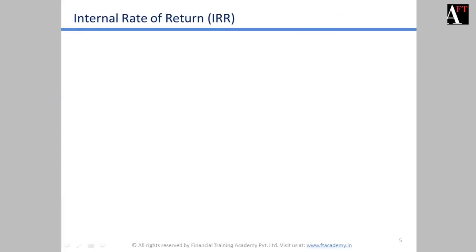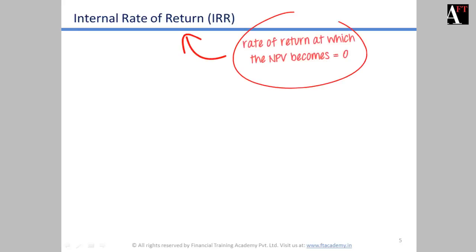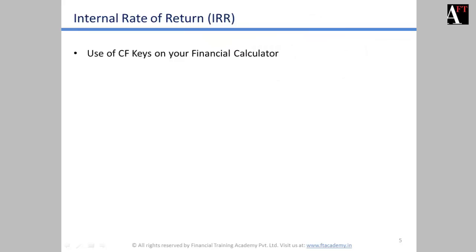The next topic is IRR — internal rate of return — which is very important and is frequently used for decision-making. Internal rate of return is the rate of return at which the NPV becomes zero. We accept all those projects whose IRR is greater than our benchmark cost of capital, or the discount rate used to discount the cash flows.